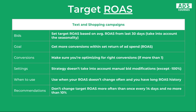Another strategy is Target ROAS. It's mainly for shopping campaigns but also works for text campaigns. You set the target ROAS based on your average ROAS from the last 30 days, just like with Target CPA. The goal is to get more conversions within your return on ad spend target, so make sure you're optimizing for the right conversions. The strategy doesn't take into account manual bid modifications except minus 100. You should use it when your ROAS doesn't change often and you have a long ROAS history. I recommend not changing the target ROAS more often than once every 14 days and no more than 10%.